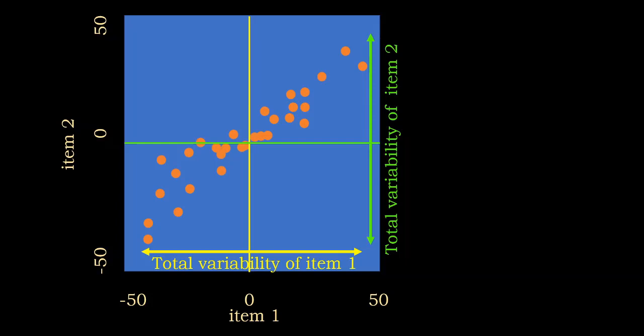In the graph we have the mean of item one and the mean of item two. The orange dots represent all the observations — one dot is one participant. The location on the x-axis indicates the score obtained in item one, and the location on the y-axis indicates the score obtained in item two.